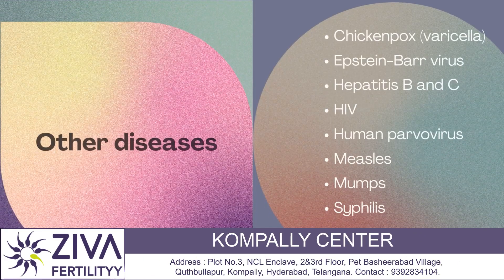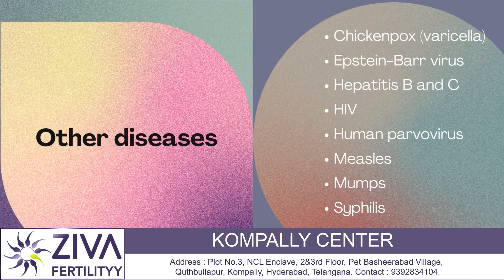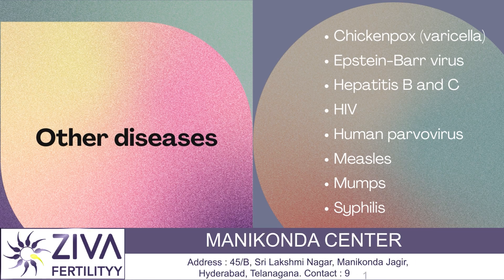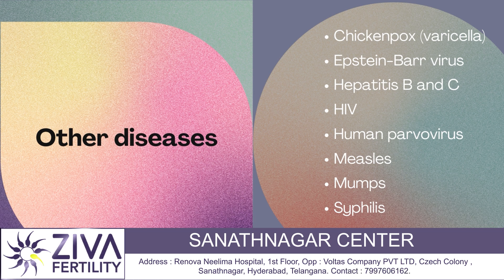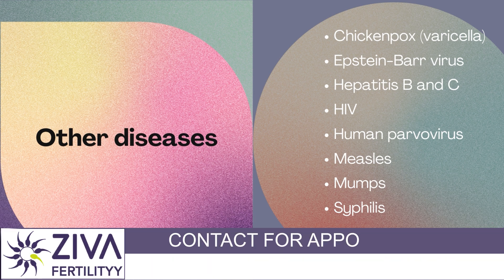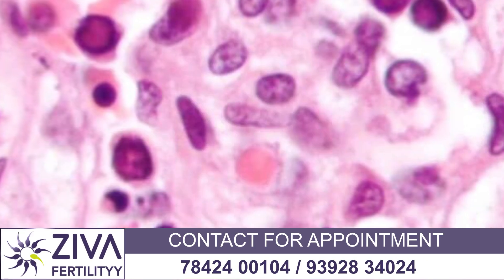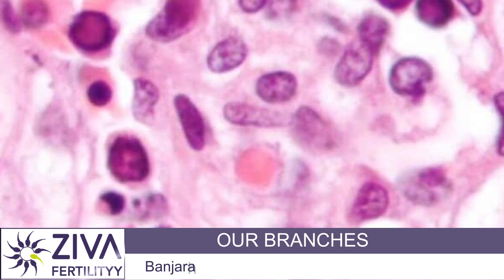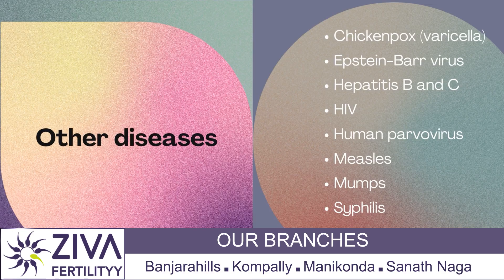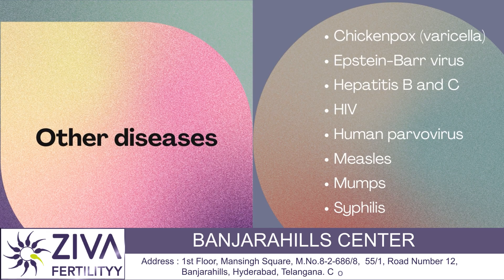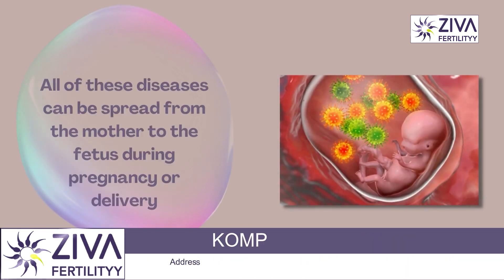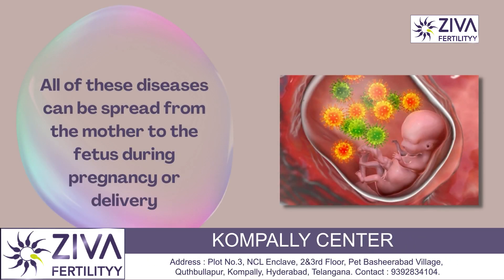The O in TORCH stands for Other diseases. This category can include several different infectious diseases such as chickenpox, Epstein-Barr virus, Hepatitis B and C, HIV, Human Parvovirus, measles, mumps, and syphilis. All these diseases can be spread from the mother to the fetus during pregnancy or delivery.